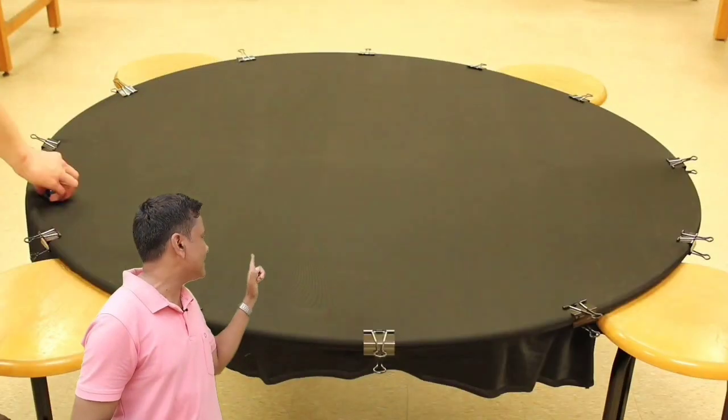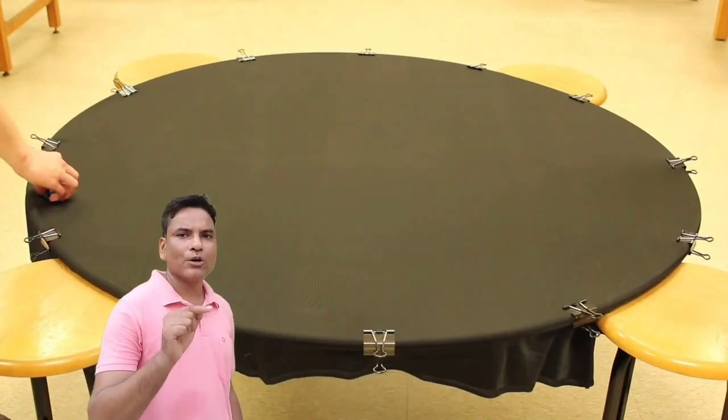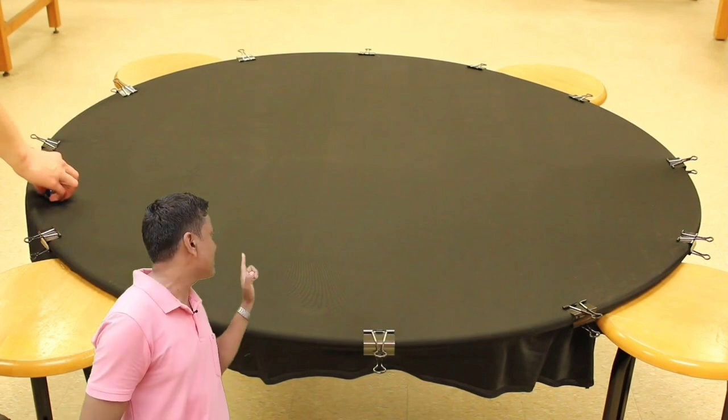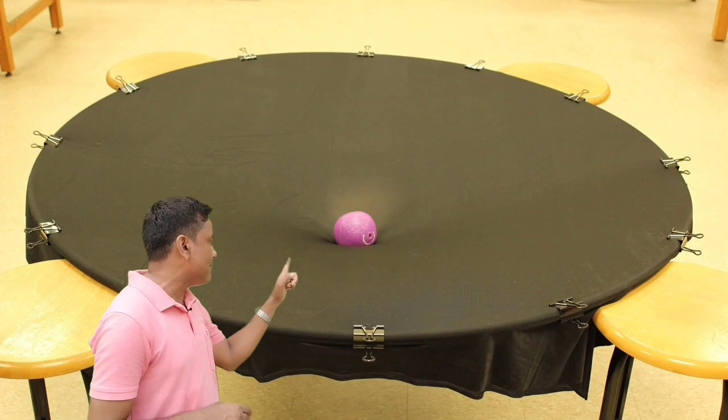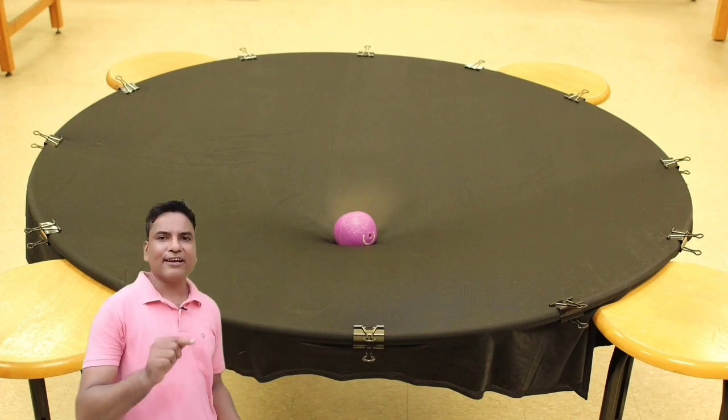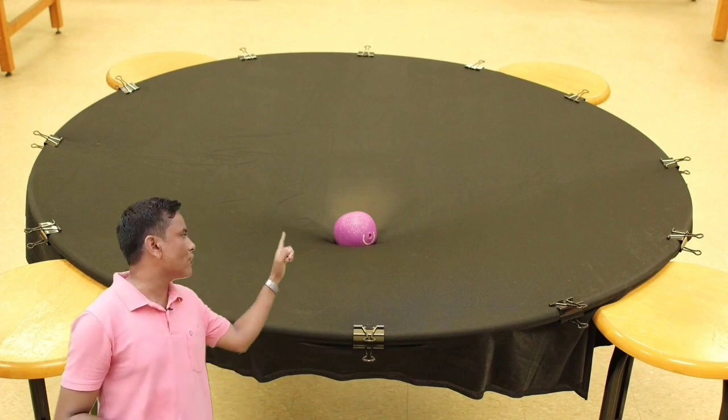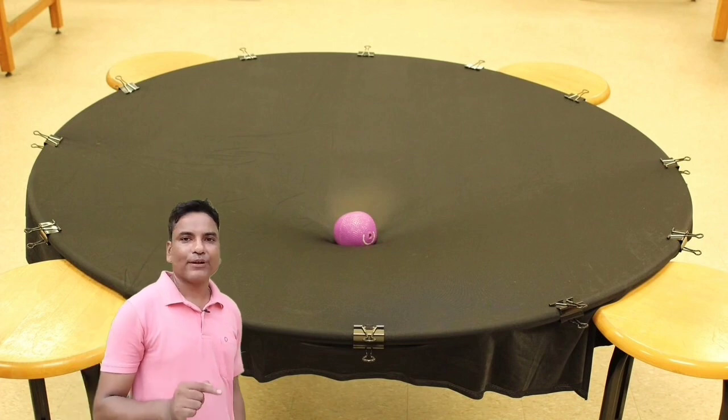And for understanding the space-time fabric, let's take an example. If we have placed a cotton fabric like this, with the help of a paperclip. Now, if we have placed a massive object at the middle point of this cotton fabric, then the object will bend or curve this fabric like this.